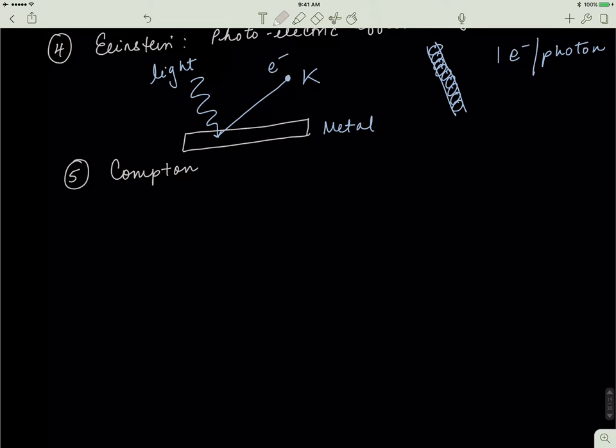So, what Compton did is, he said that if light comes with some initial wavelength, and that light hits an electron, then it turns out that the collision causes a change in wavelength of the light.